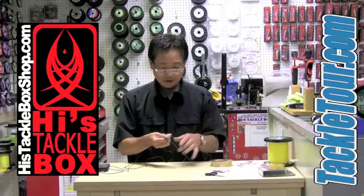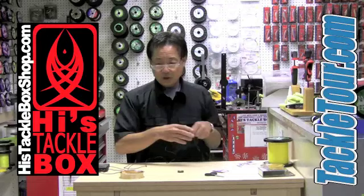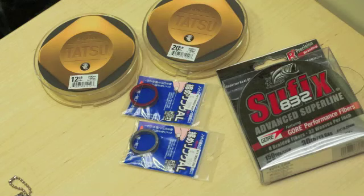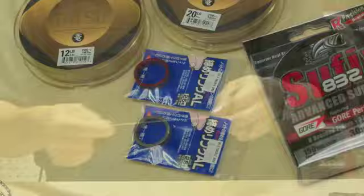What we have here is 30 pound solid braided line and we're going to connect a 12 pound fluorocarbon and the tool we're going to feature today is called a finger saver.